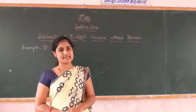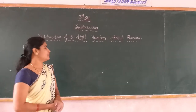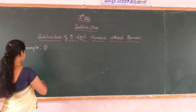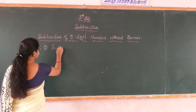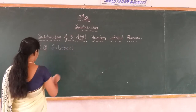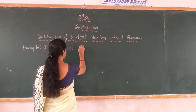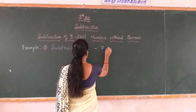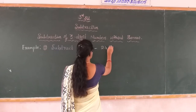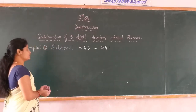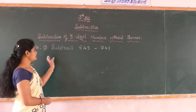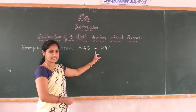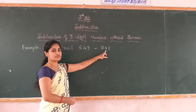I will show with an example. Now I start the class with solving the first example. I write the question. Dear students, subtract 543 minus 241. The minus is the sign of subtraction, that is why 241.